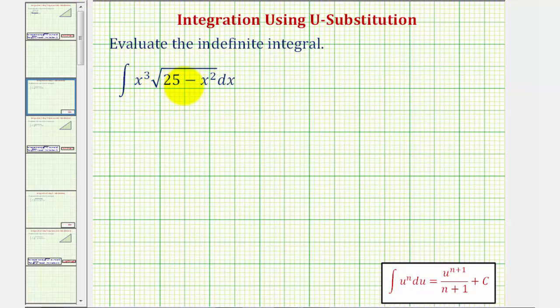We'll let u equal the radicand of 25 minus x squared. So if we let u equal 25 minus x squared,